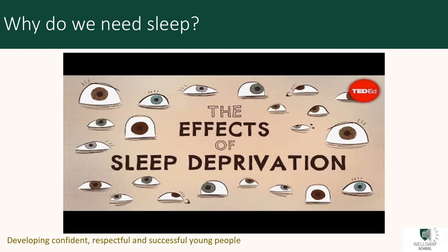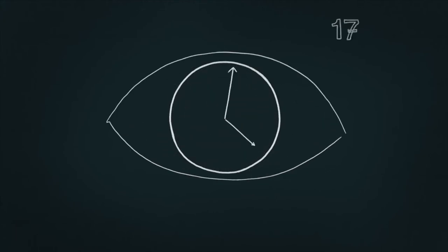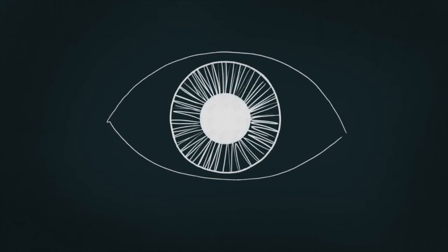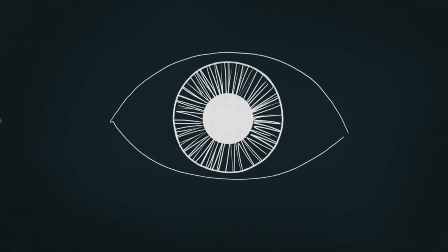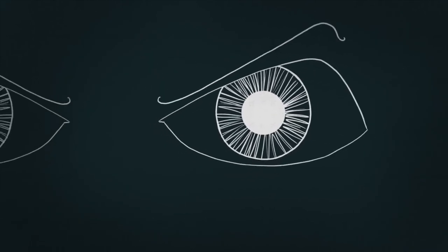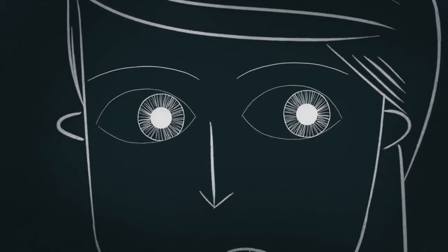A good way to understand the role of sleep is to look at what would happen if we didn't sleep. The current world record for the longest period without sleep is 11 days, set by a young man called Randy Gardner in 1965. In 1965, 17-year-old high school student Randy Gardner stayed awake for 264 hours — that's 11 days — to see how he'd cope without sleep. On the second day, his eyes stopped focusing. Next, he lost the ability to identify objects by touch. By day three, Gardner was moody and uncoordinated. At the end of the experiment, he was struggling to concentrate, had trouble with short-term memory, became paranoid, and started hallucinating.